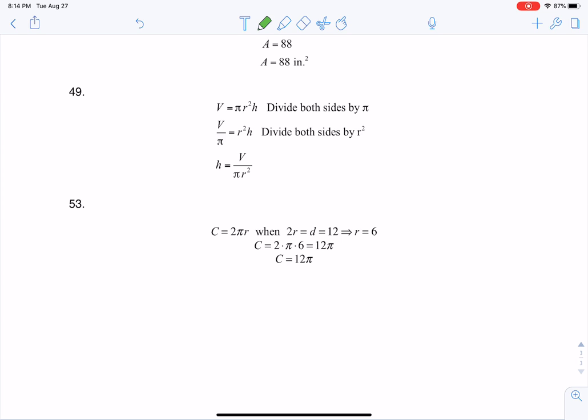Hey, Route 31. I had a question on how to do number 53 from the section 2.3 homework. This was asking us to find the circumference of a circle when the diameter is 12.